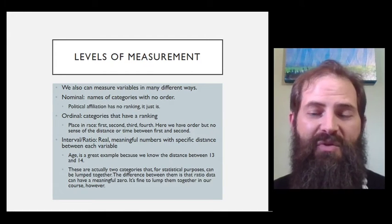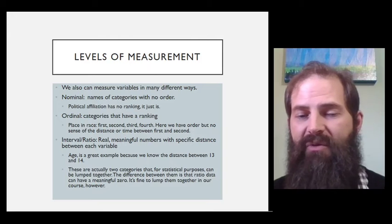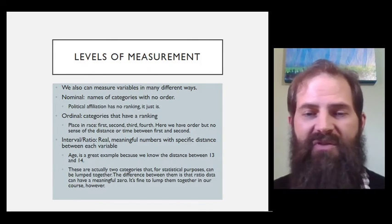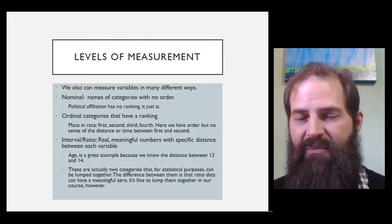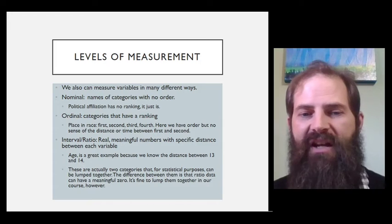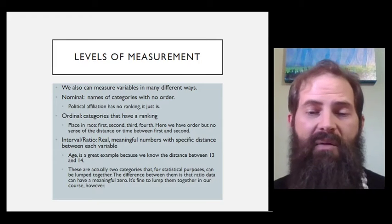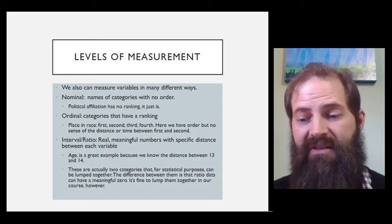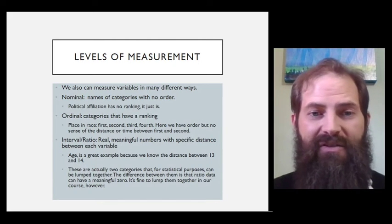Now, the cool thing is when you were in 232, you probably learned about interval and ratio as two different categories. The actual difference between them: they're similar for statistical purposes and can be treated the same. The actual difference between them is that ratio data actually has a meaningful zero. But for our purposes, we're simply going to lump them together. In fact, you're going to see how far we're going to lump them together in just a moment.